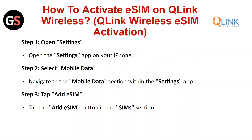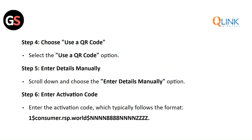Step 3: Tap on the Add eSIM button in the SIMs section. Step 4: Choose Use a QR Code — select the Use a QR Code option.